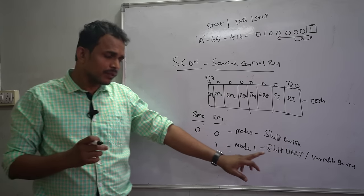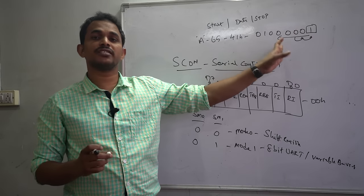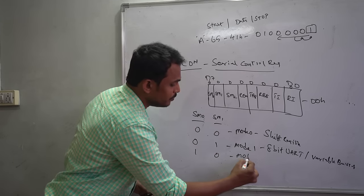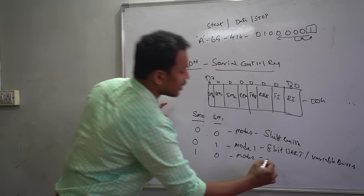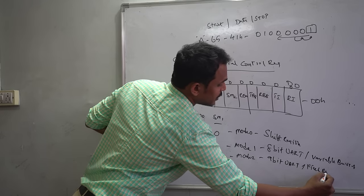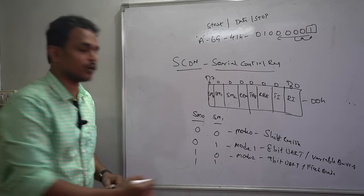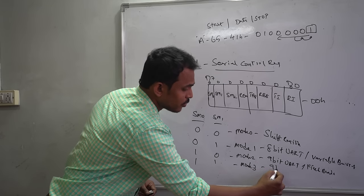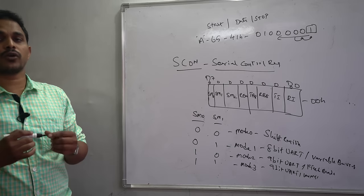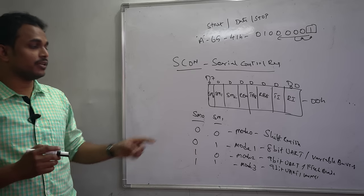Mode 1 directly sends 8-bit data between start and stop bits without shifting. When SM0 and SM1 are set to 10, it is Mode 2, which supports 9-bit data between start and stop bits but with a fixed baud rate — the baud rate cannot be changed in Mode 2. When set to 11, it is Mode 3, which also supports 9-bit data but with a variable baud rate.